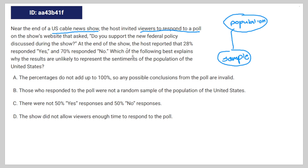But really, that's about it. This isn't a random sample of every single person in the United States, because we're given the condition that they have to have access to cable television, which not everybody in the United States does. So B is the correct answer. As it says, those who responded to the poll were not a random sample of the population of the United States, because they had to have cable.